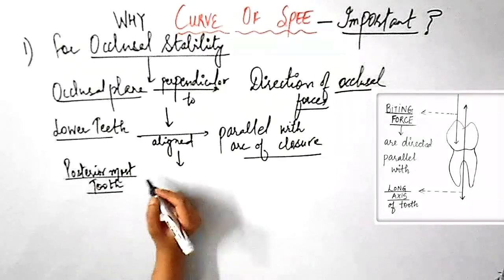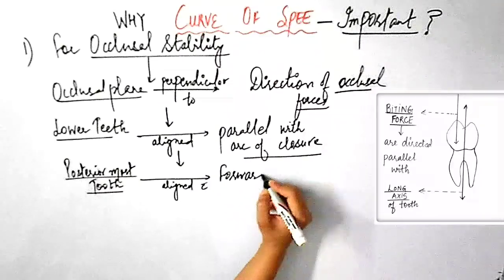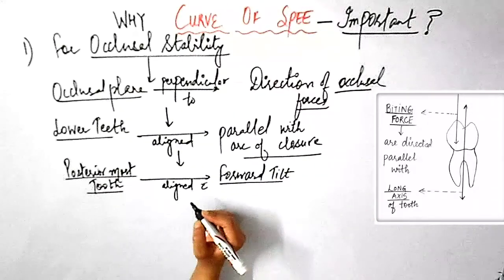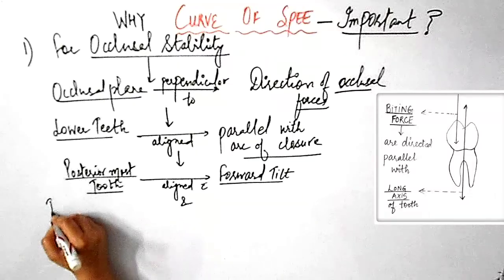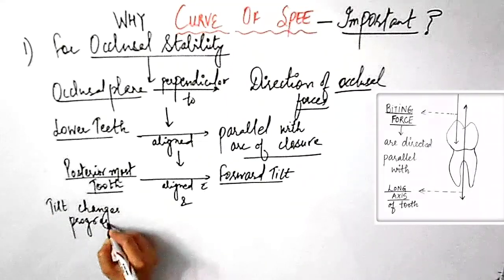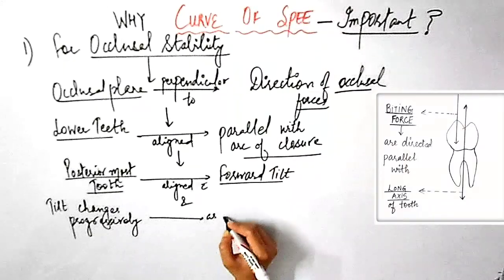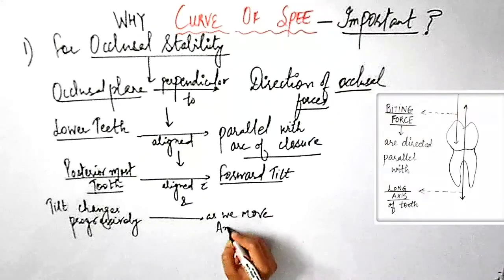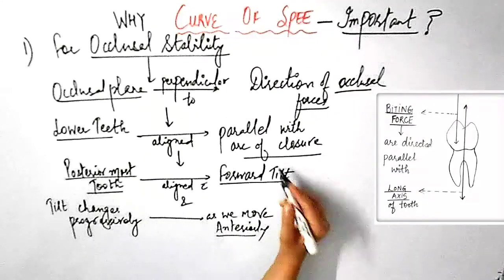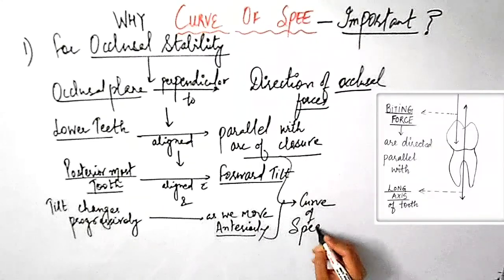I hope you understand this point that why the posterior most tooth in the lower arc is tilted. It is because the long axis of each tooth is aligned parallel with the arc of closure. And this tilt changes progressively as we move towards the anterior teeth. And this progressive change in alignment creates what we call as curve of Spee.